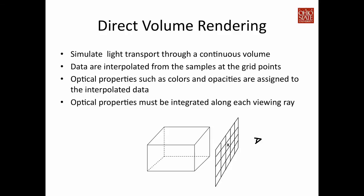This slide gives you an overview of the volume rendering algorithm. What we're trying to do is simulate the light transport through a continuous space. Here I'm sending a ray from the camera — that's the eye — through each of the pixel centers. Then I'm going to sample the data from the volume space. I will transfer the data value into optical properties such as color and opacity, then blend those optical properties together to get a single color and opacity and assign it back to the pixel. This is essentially a ray tracing algorithm, and this is one of the most common methods.